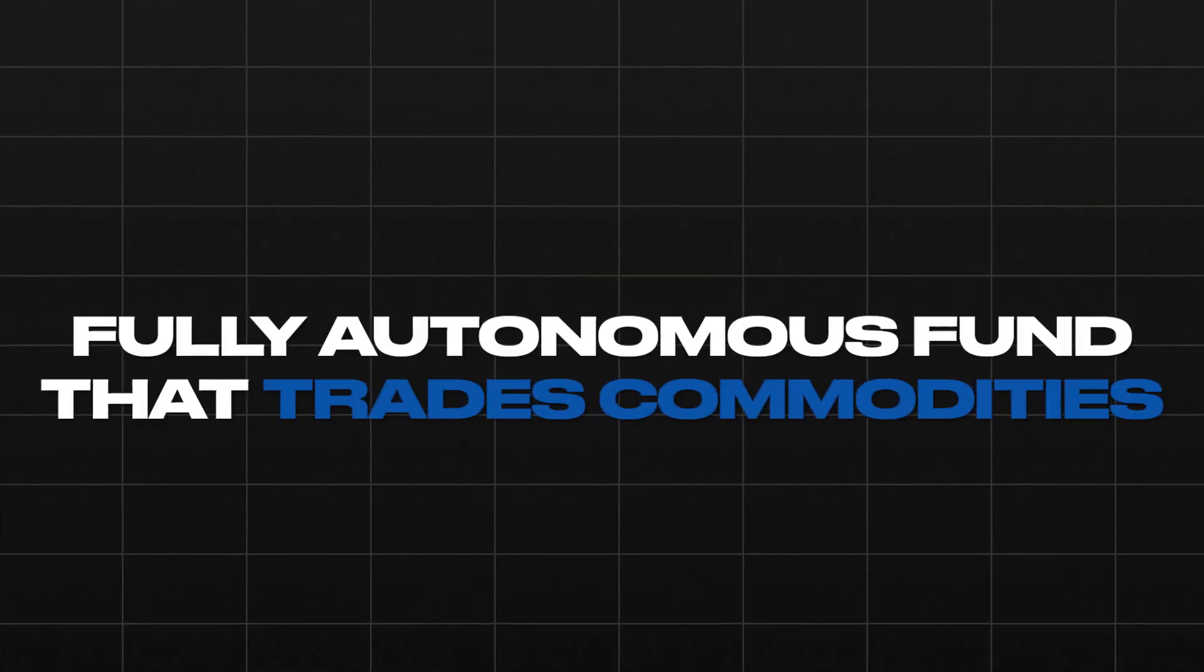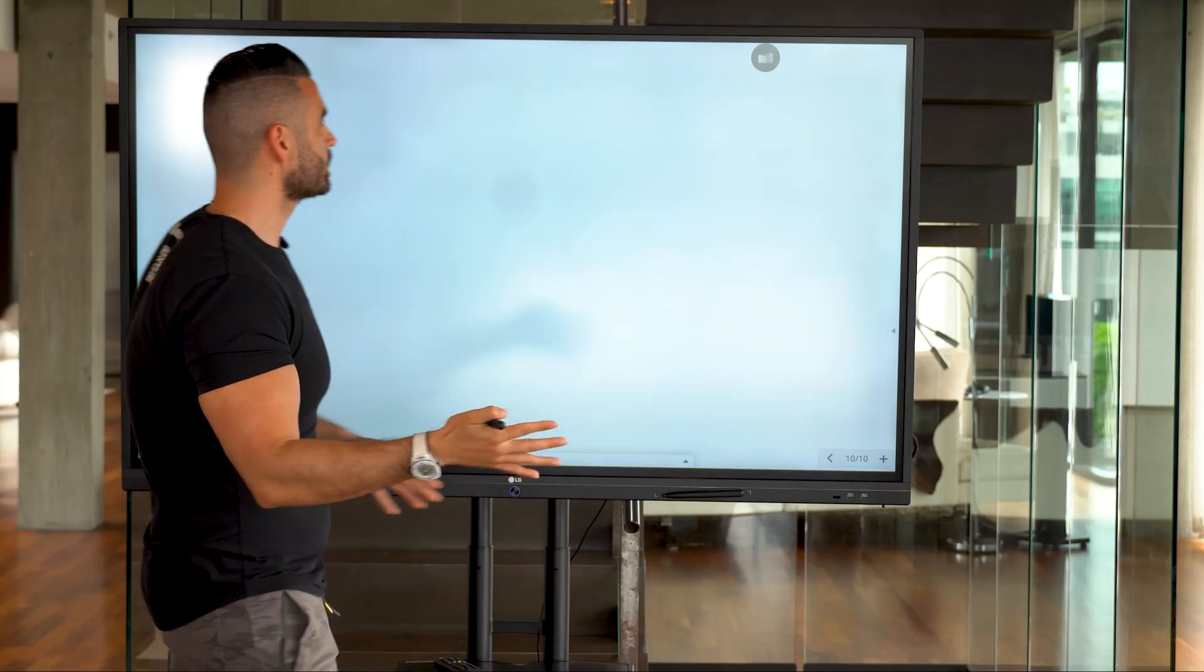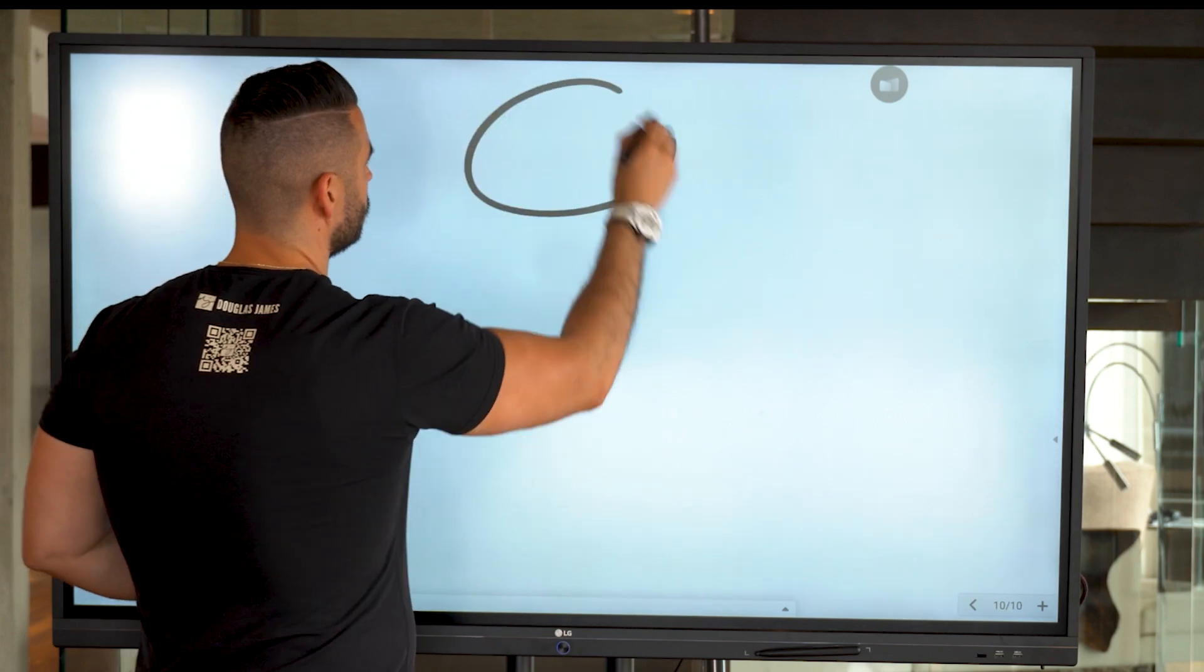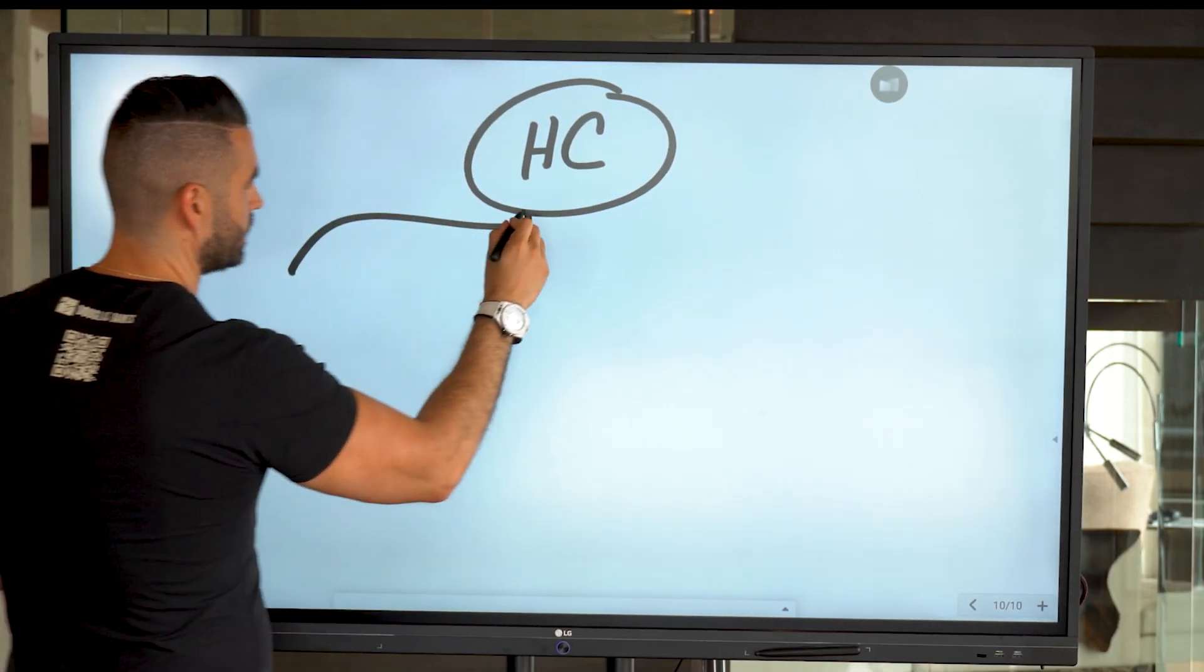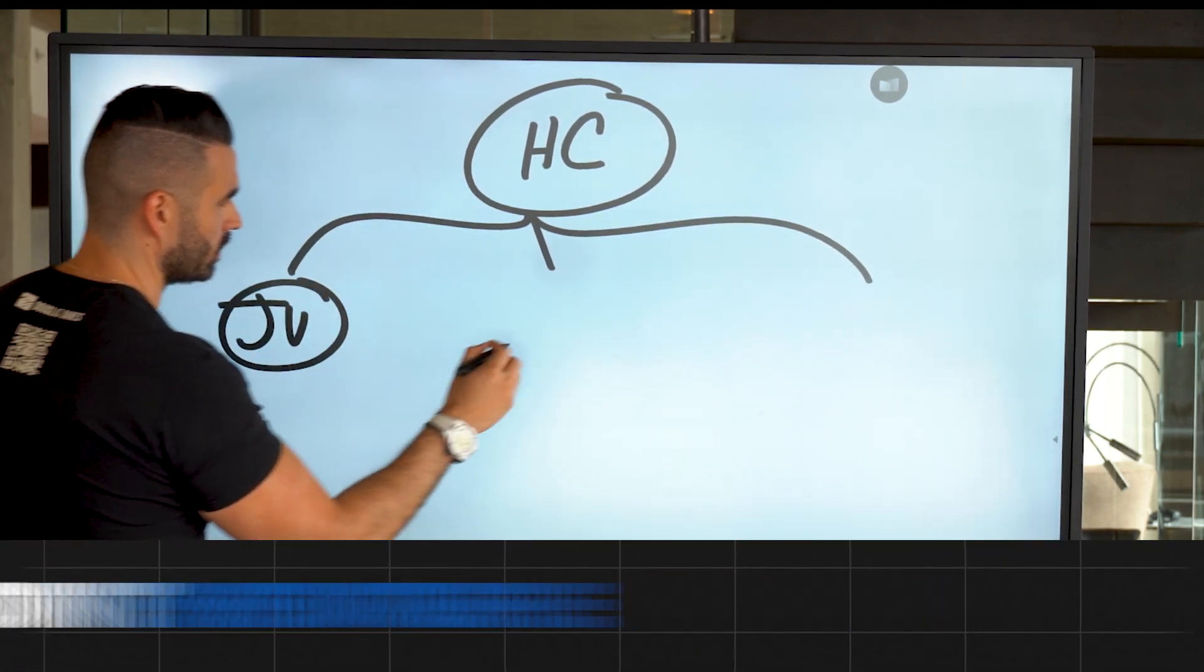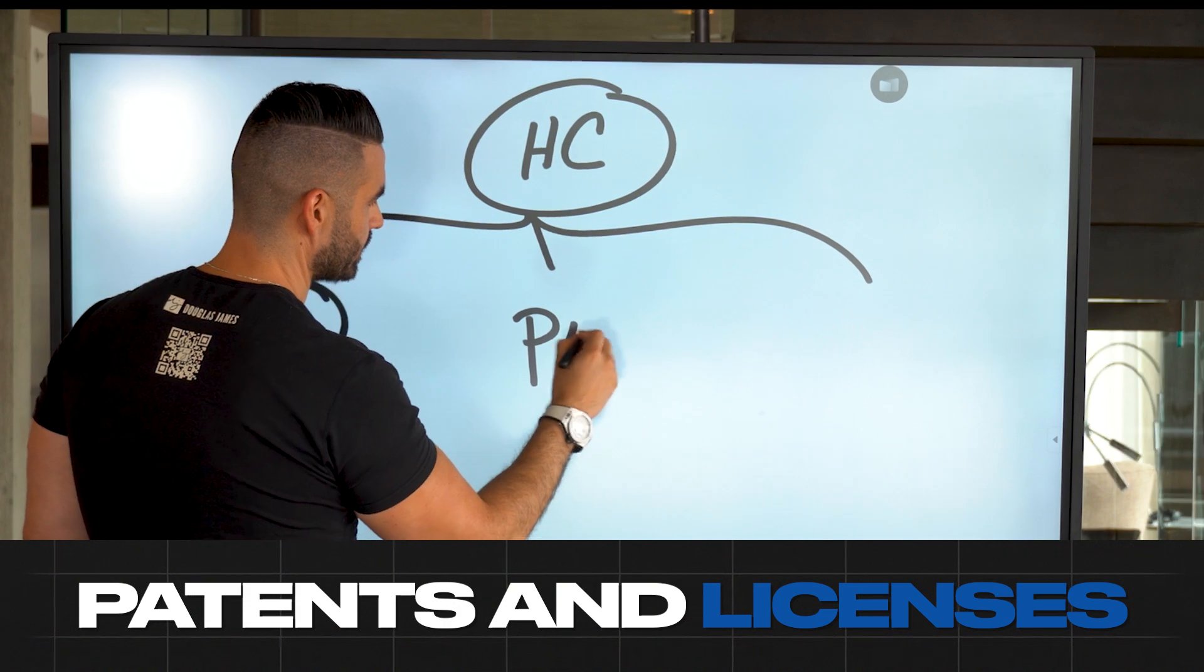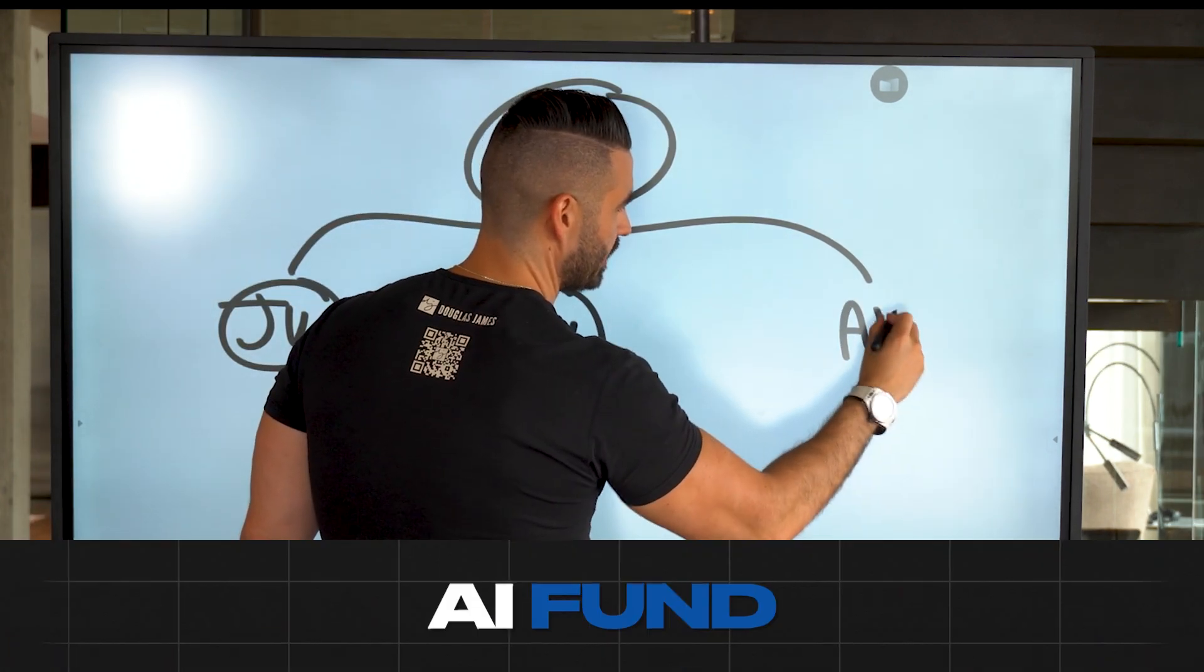We have a fully autonomous fund that trades commodities using our AI patents. So the way it works is it looks just like this. We have a holding company at the top and it's sectioned off just like this. We do JVs, we do patents and license and we do the AI fund.